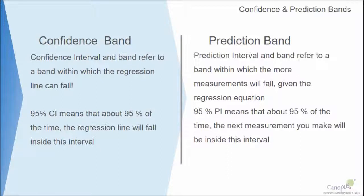CI refers to confidence interval and PI refers to prediction interval. Prediction is largely about the data points we are going to collect in the future, while CI is largely to do with the data we already have on hand. Let's go to Minitab and find out how we could actually plot the confidence interval and prediction interval.